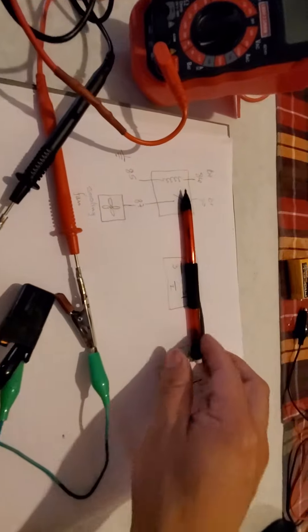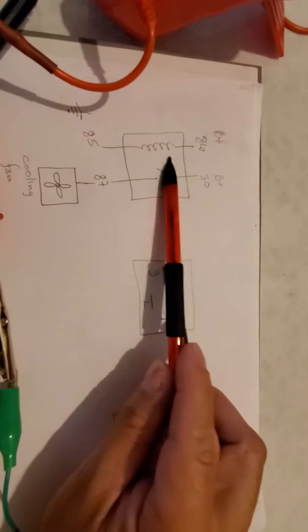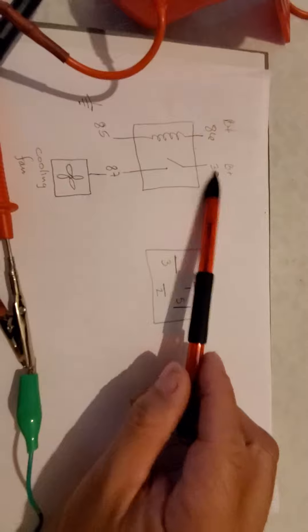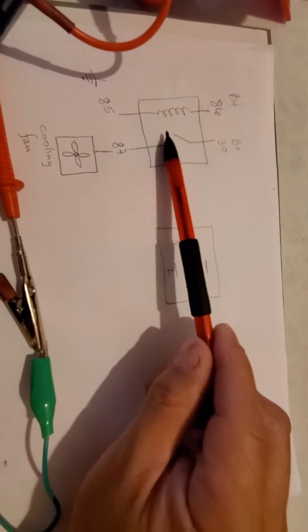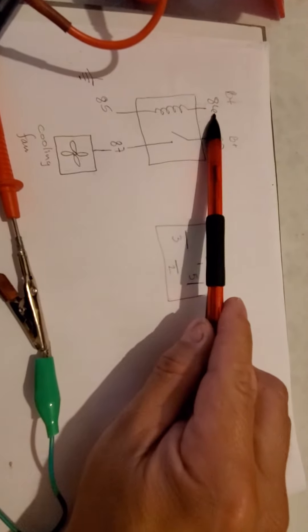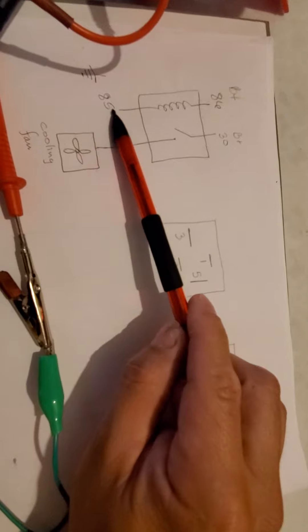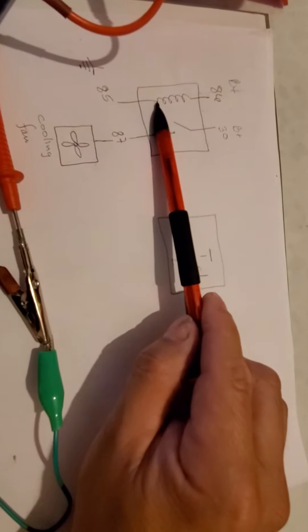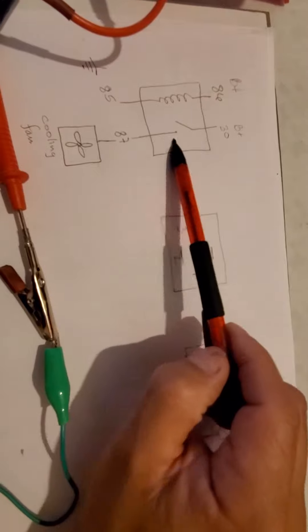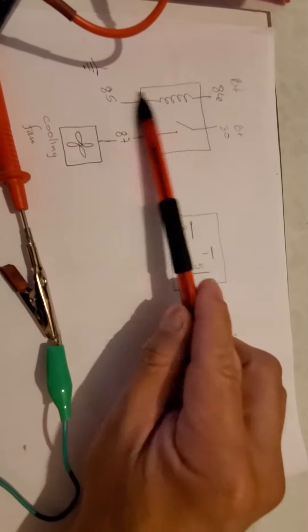Basically if we remember about the Boyle style relay right here, we know that pin 86 and pin 85 are the coil side and pin 30 and 87 is the switch side. So based on this diagram right here we can go ahead and apply it to...